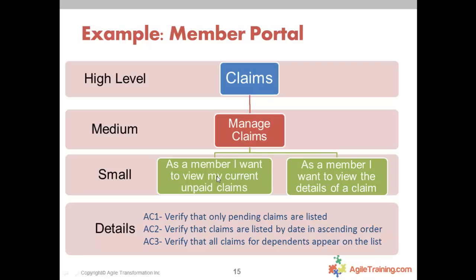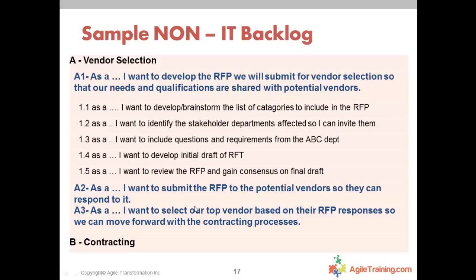Details — the acceptance criteria — are things like: verify that only pending claims are listed on this page; verify claims are listed by date in ascending order; verify all claims for dependents appear on the list. Those are one level below the story. We gather those details just-in-time — one or two iterations before that story gets done. At the beginning of the project, you're building a backlog at the story level. Getting all the detail upfront is essentially waterfall requirements gathering.